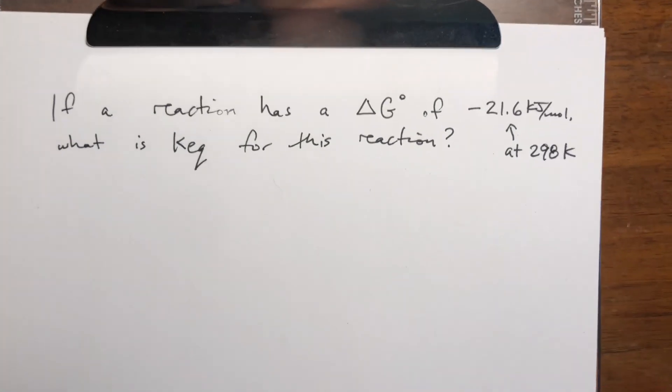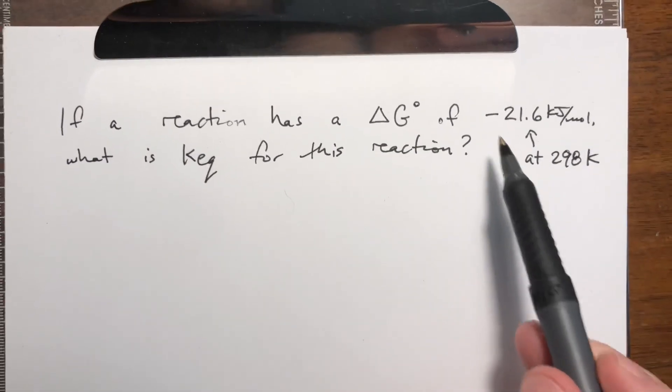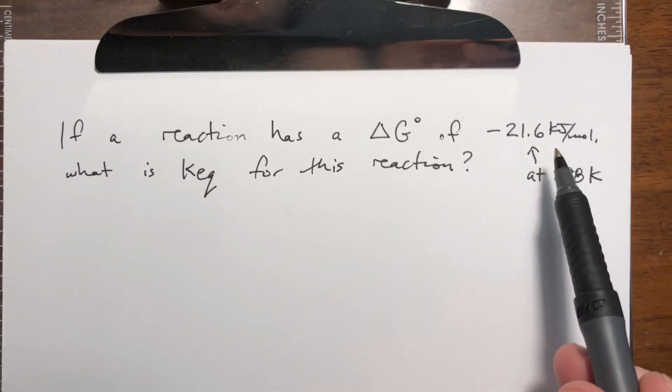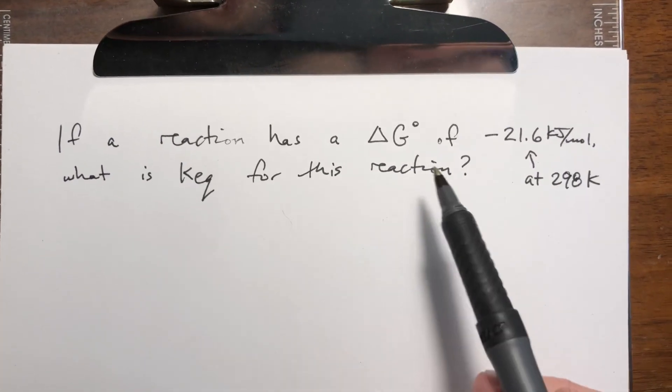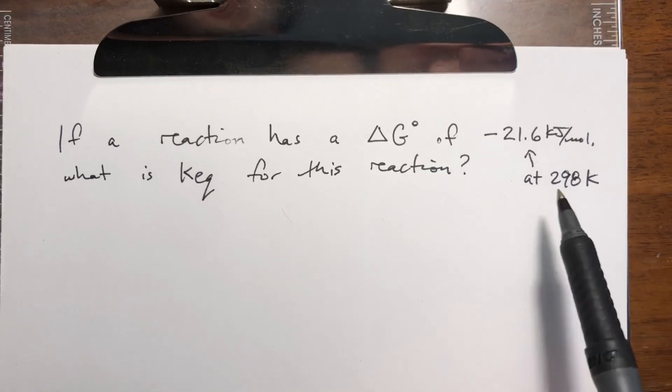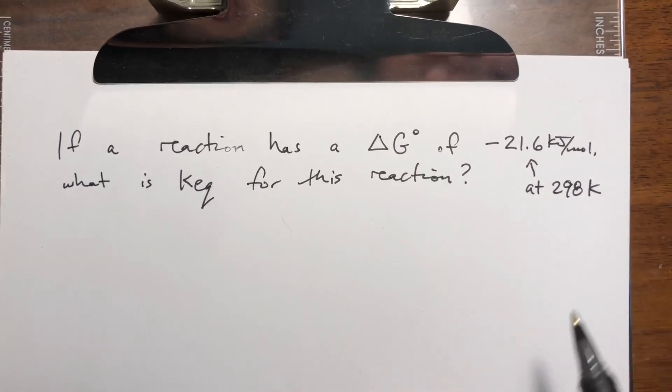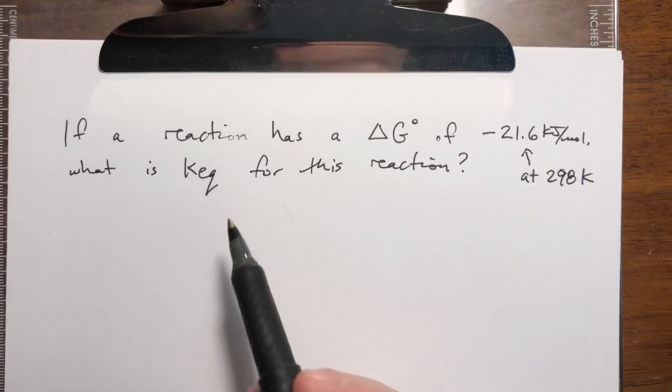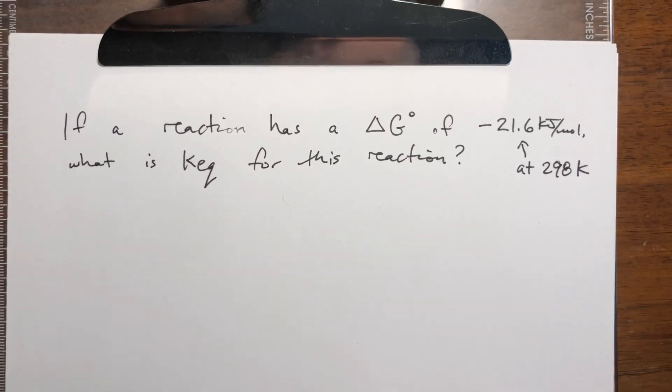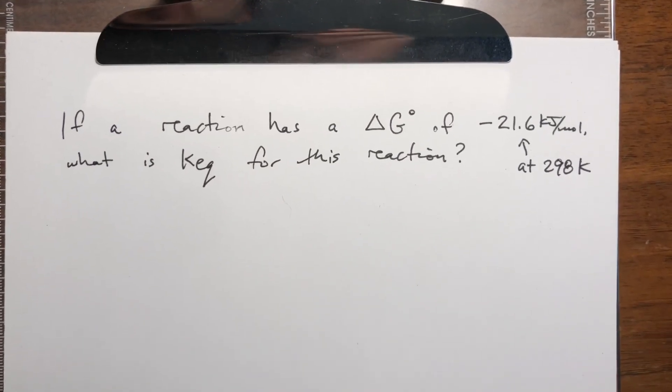For this example we are going to start with a delta G value. This is a negative 21.6 kilojoule per mole value for delta G. This is delta G at standard conditions, which is why it's at 298 Kelvin.